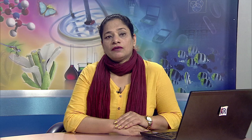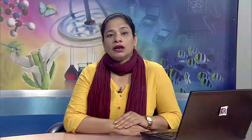Raindrop erosion: after falling on the land surface, raindrops cause detachment of soil particles which are then washed away by flowing water. Raindrops behave like tiny bombs when falling on exposed soil, displacing soil particles and destroying soil structure. The presence of vegetation on land prevents raindrops from falling directly on the soil, thus erosion of soil in areas covered by vegetation is prevented. With continued rainfall, the displaced soil particles fill in the spaces between soil particles, preventing water from seeping into the soil.